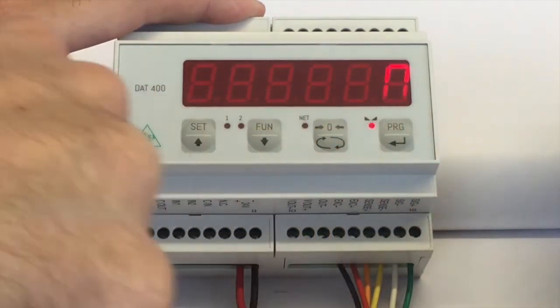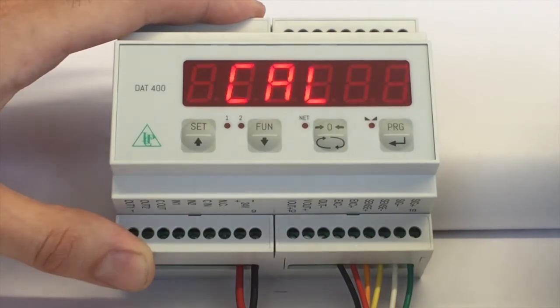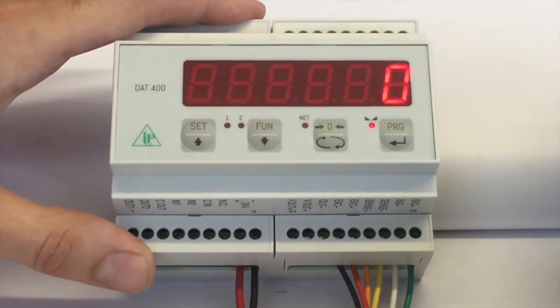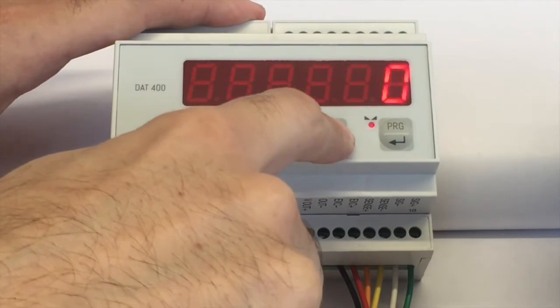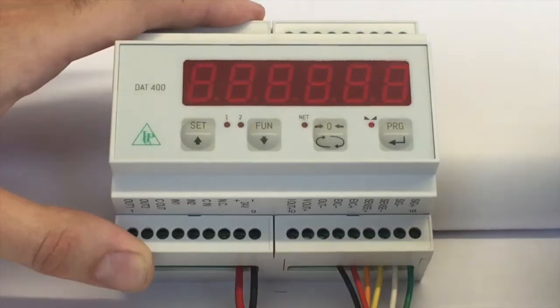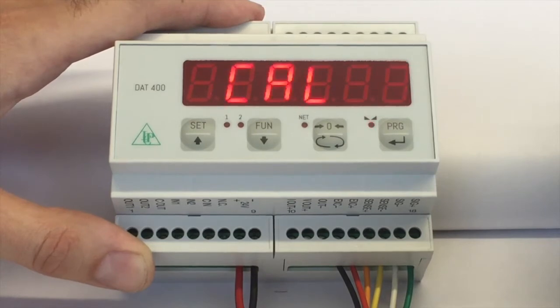Then press PRG to start the calibration phase. Make sure that there is no weight on the system. Then fully discharge the system by pressing 0. You will see CAL and 0 flashing on the display.